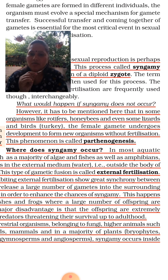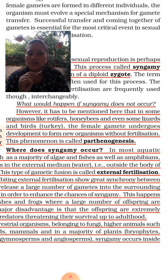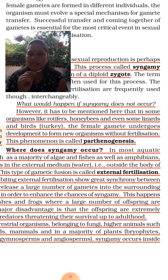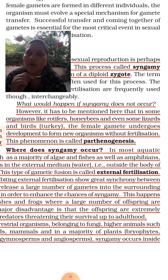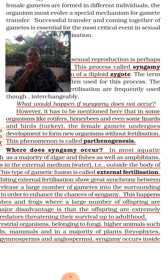What happens in some organisms without fertilization? In some organisms like rotifers, honey bees, and even some lizards and birds, the female gamete undergoes development to form a new organism without fertilization. This phenomenon is known as parthenogenesis. Parthenogenesis is not included in sexual reproduction — it is just an exception to syngamy.